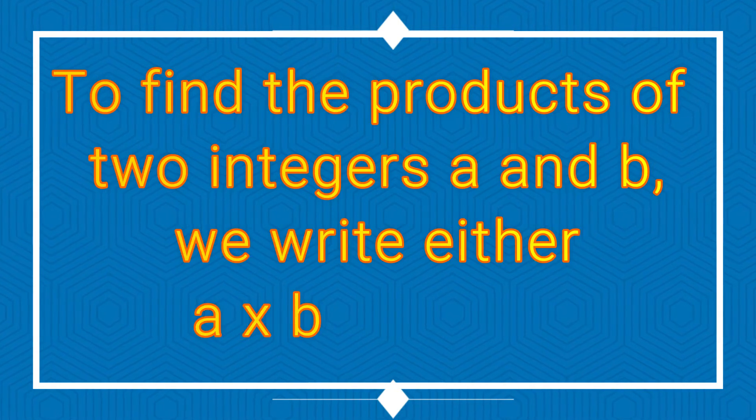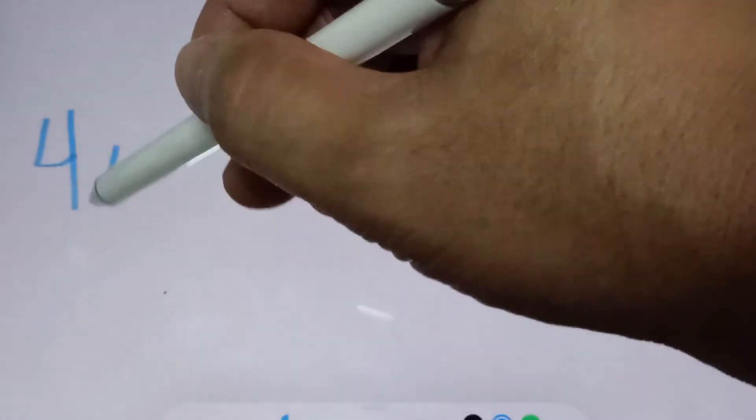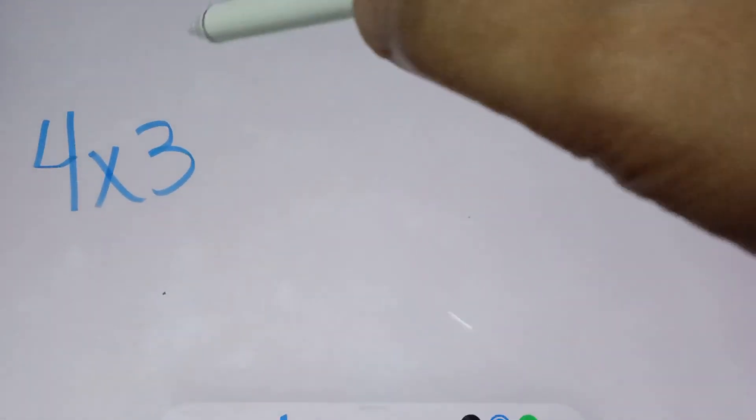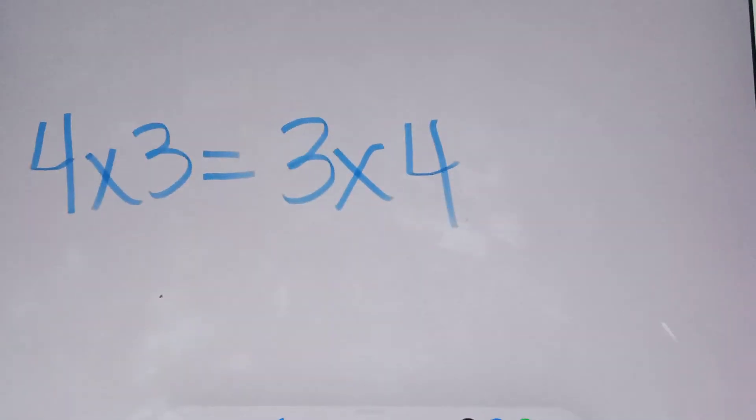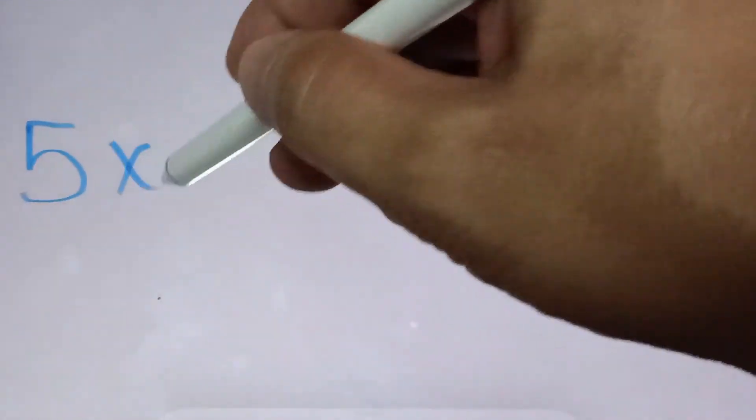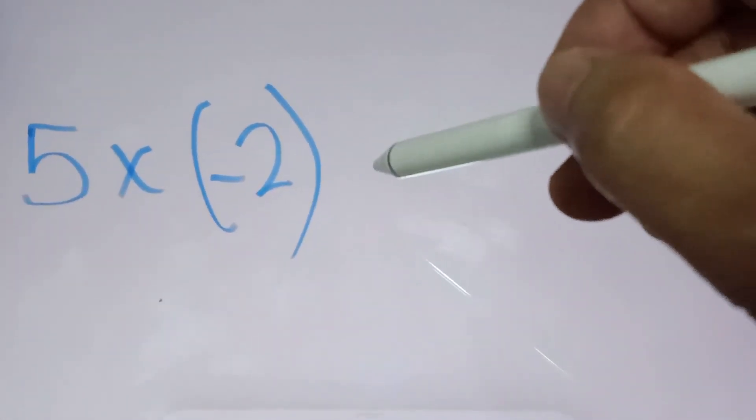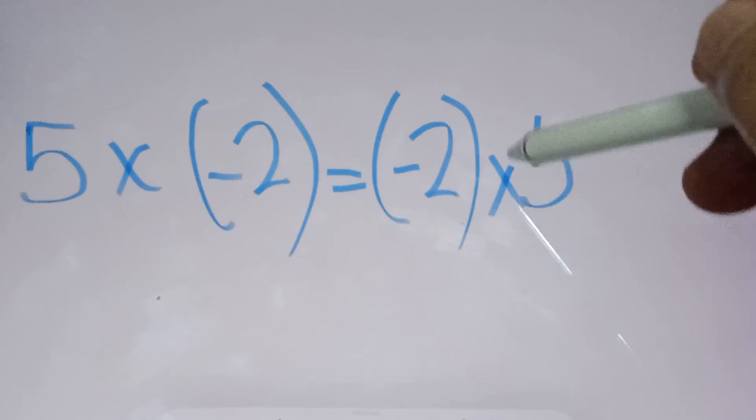To find the product of two integers, a and b, we write either a times b or b times a. For example, if you have 4 times 3, and this is equal to 3 times 4, and the answer is 12. Another one, if you have 5 times negative 2, this will be also equal to negative 2 times 5.